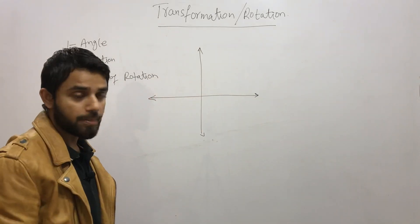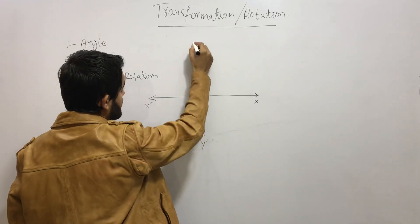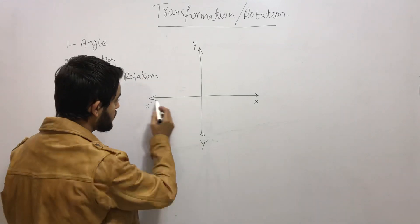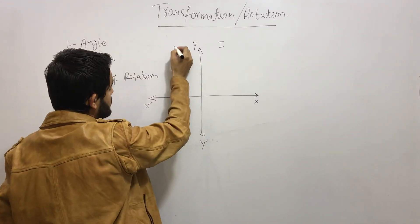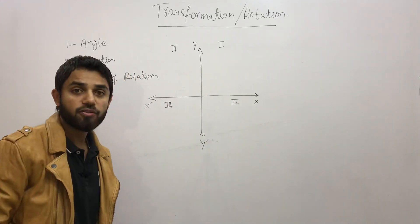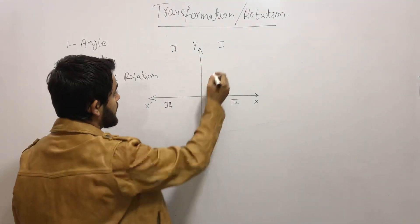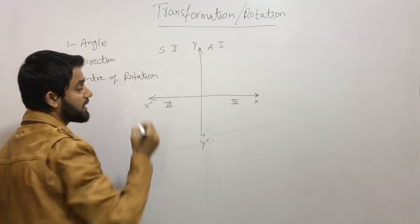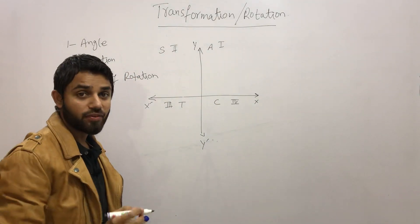The XY plane is made up of two real lines: X and X prime (horizontal), and Y and Y prime (vertical). Together they form four quadrants. In the first quadrant, all values are positive. In the second, only sine is positive. In the third, only tan is positive. In the fourth, only cos is positive.